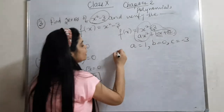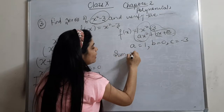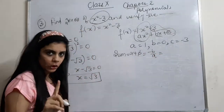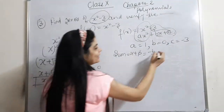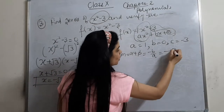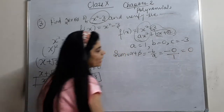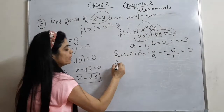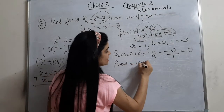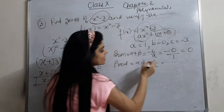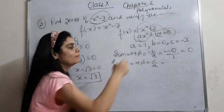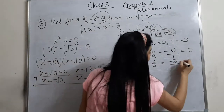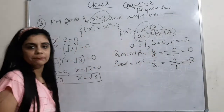Using the formulas: the sum of zeros, alpha + beta = −b/a = −0/1 = 0. Zero divided by anything is zero. The product of zeros, alpha × beta = c/a = −3/1 = −3.